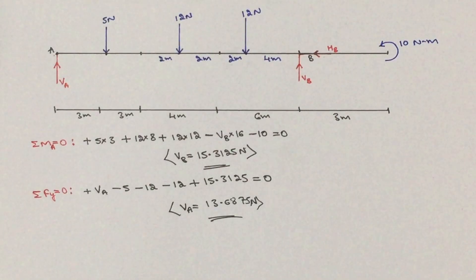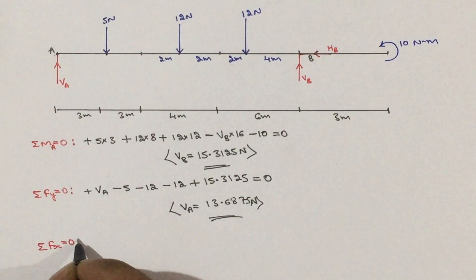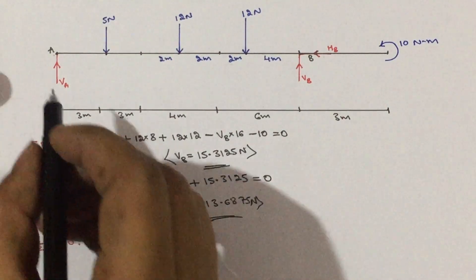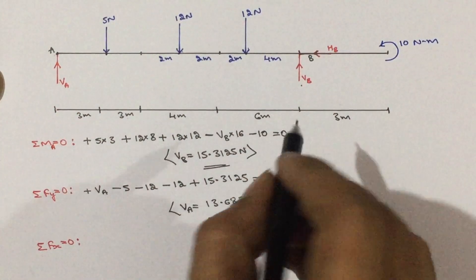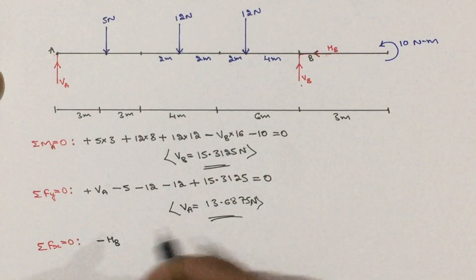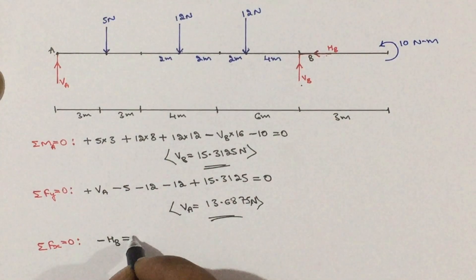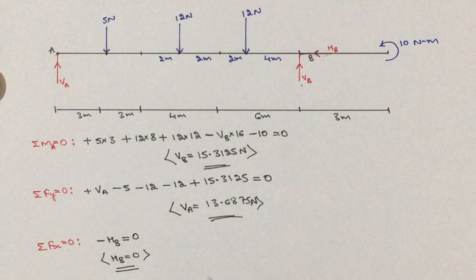The last condition is sigma Fx = 0 — only horizontal forces, rightward positive and leftward negative. All other forces are vertical — leave them. The couple moment is left out. The only horizontal force is HB, moving leftward: −HB = 0, therefore HB = 0. That is all for this problem. Thank you.